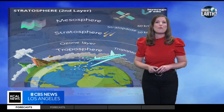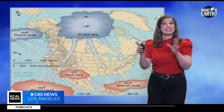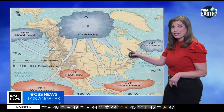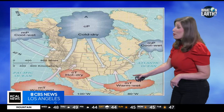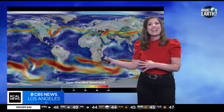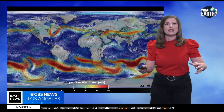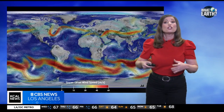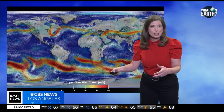Air masses form over large surfaces with the same temperatures and humidity, called source regions. When winds move over these air masses, they carry their weather conditions from the source region to a new region.